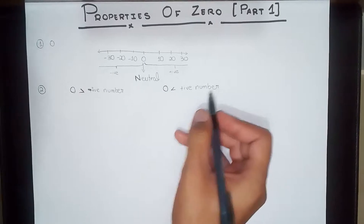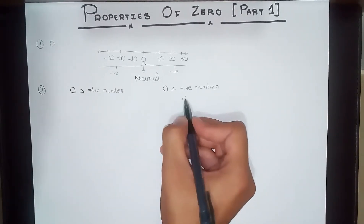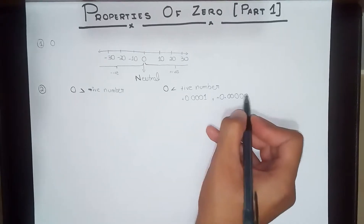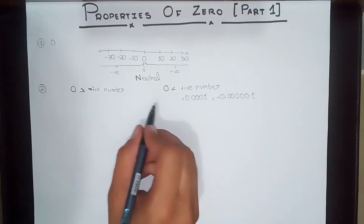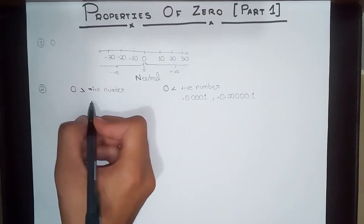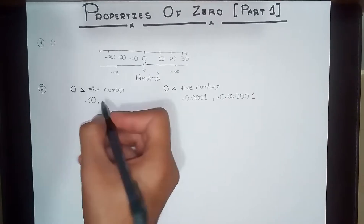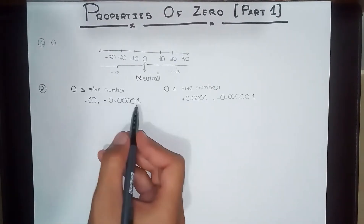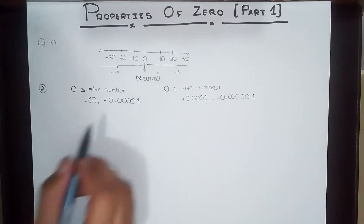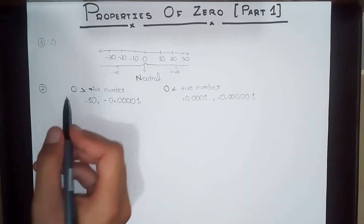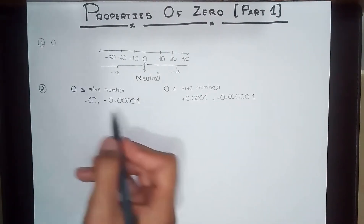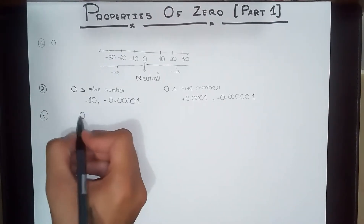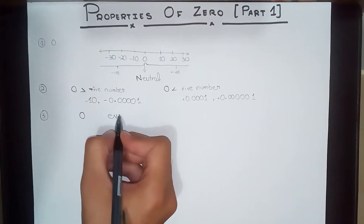The positive numbers could be very small fractions, very close to zero, but they are always going to be greater than zero. Likewise, I don't care how close a negative number is to zero — if it is negative, it is going to be less than zero. So basically, zero is always greater than all negative numbers.